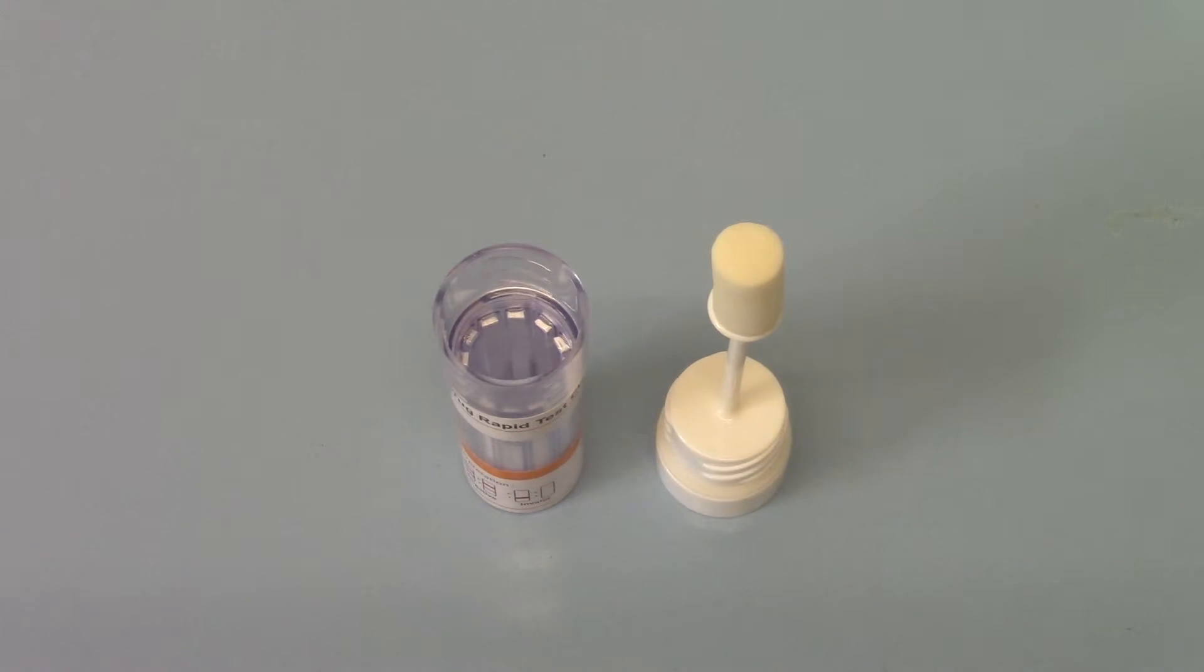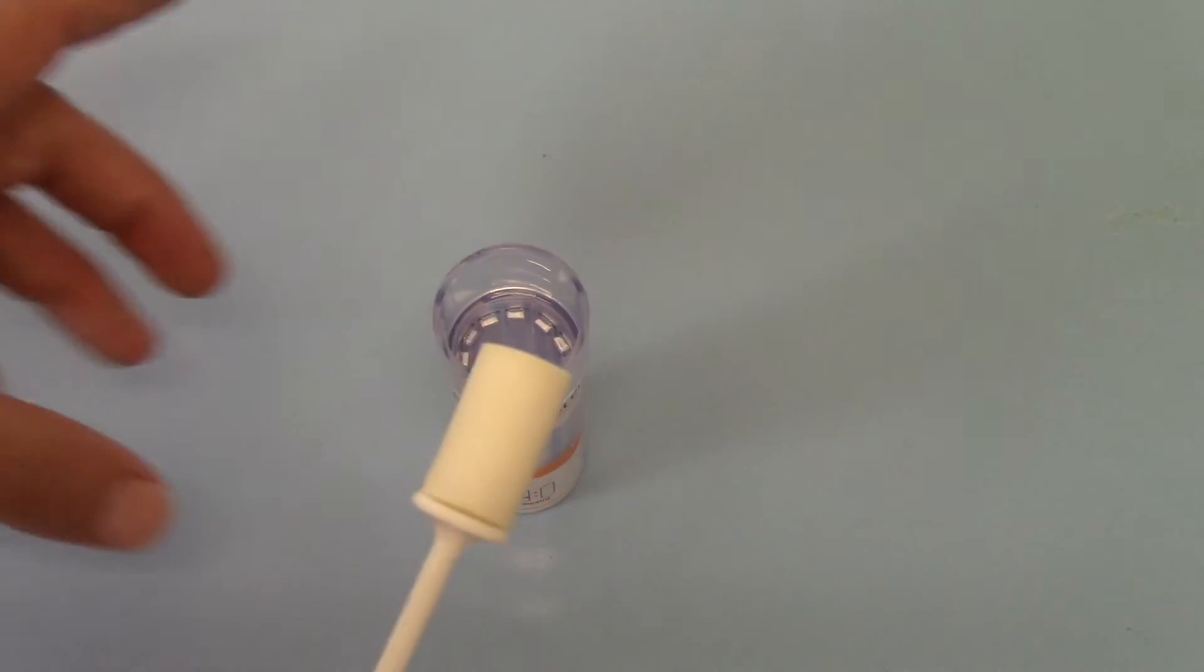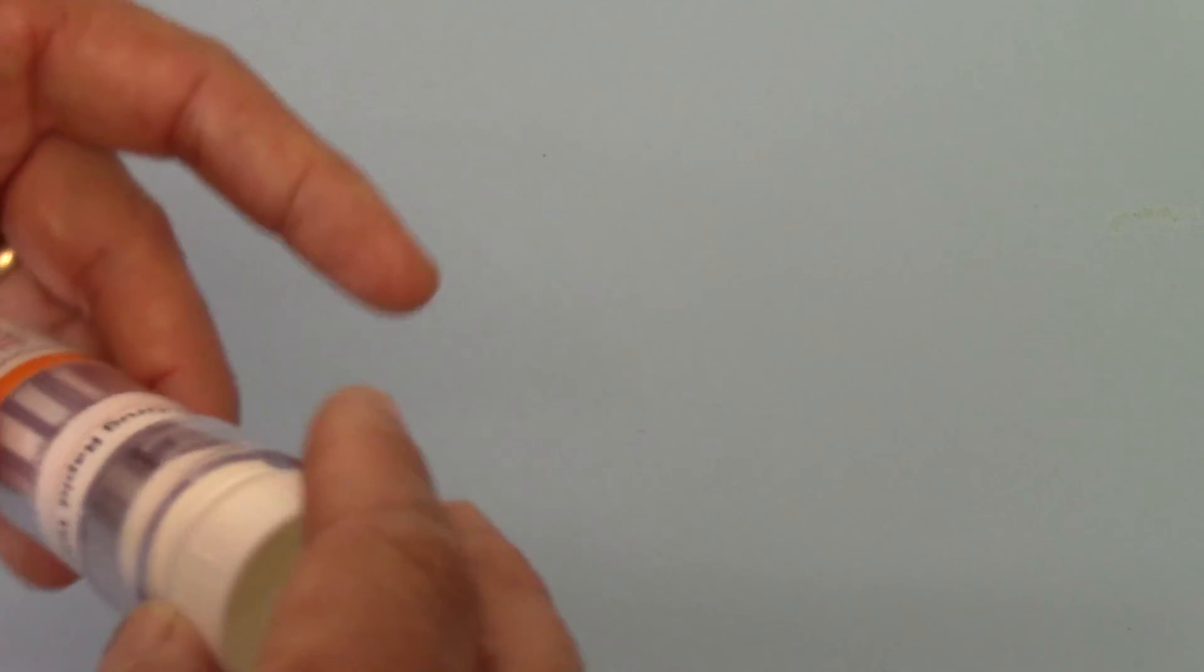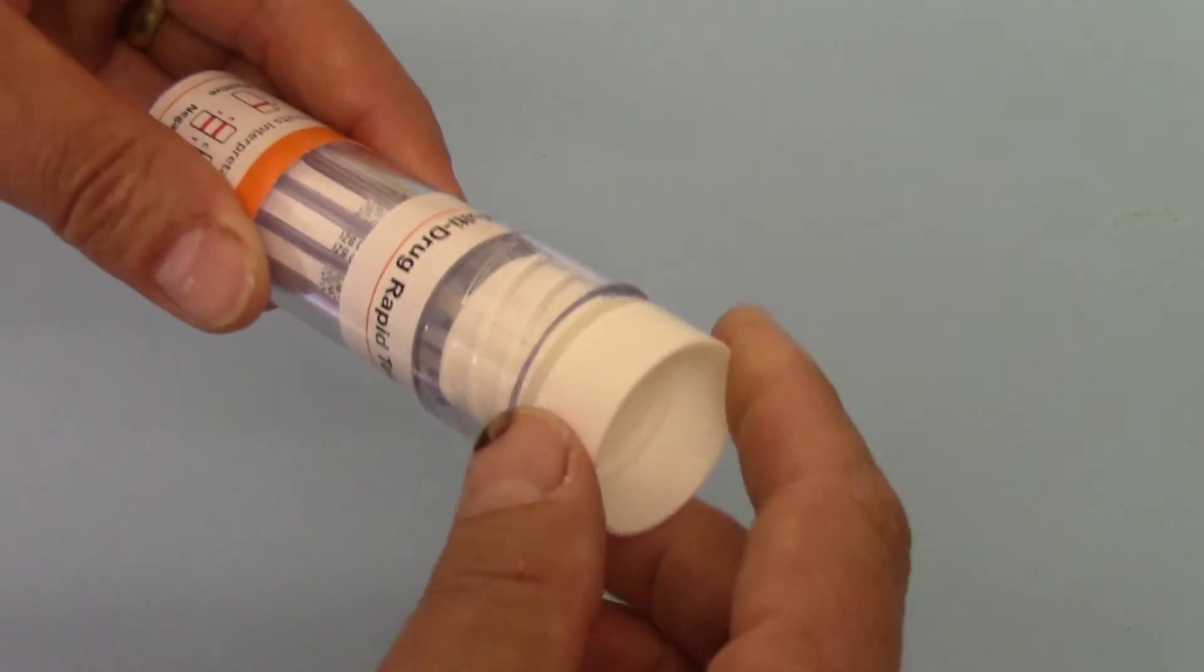So when they've completely saturated the swab, as this one has been, you'll see that it is now completely floppy. And you are now able to take that sample and by placing it into the base of the barrel and screwing the lid down, the sample will discharge into the base of the barrel.